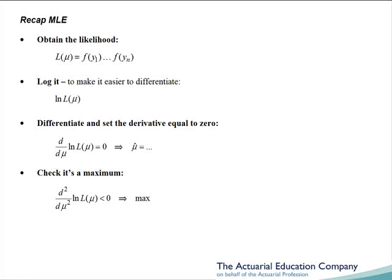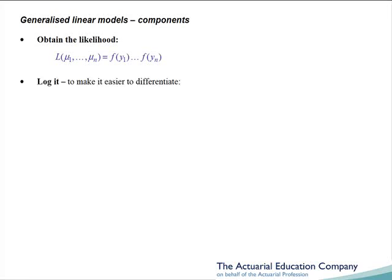Well, how do we adapt this for generalized linear models? Well, step one, we still obtain the likelihood. However, each individual is unlikely to have the same mean claim amount, for example. And so we'll have mu1 to mu n instead of a single mu. Once again, it's the product of the PDFs. For example, the product of the PDF of the claim amounts. Next, we log it, and this gives us our log likelihood.